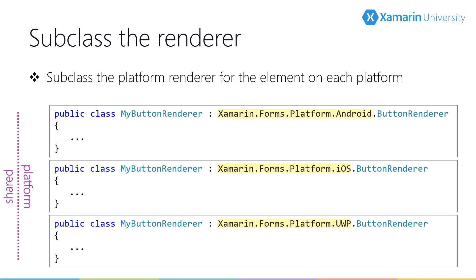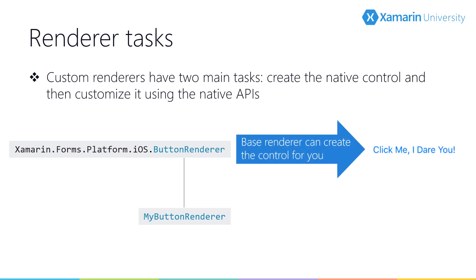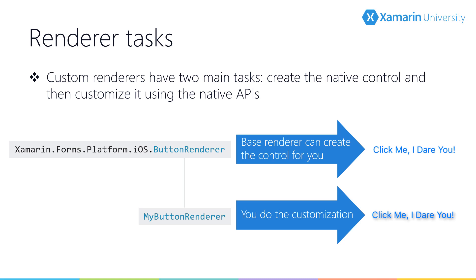Then, in the head projects for each platform, we subclass the renderer for the base element. It's common to use the same class name for each platform, but it's not required. Note that the namespaces for the renderers are different on each platform, as the renderer is provided by the platform-specific Xamarin Forms NuGet package. Our custom renderer has two primary tasks: it needs to create the native control, and it needs to apply the customizations to the native control.